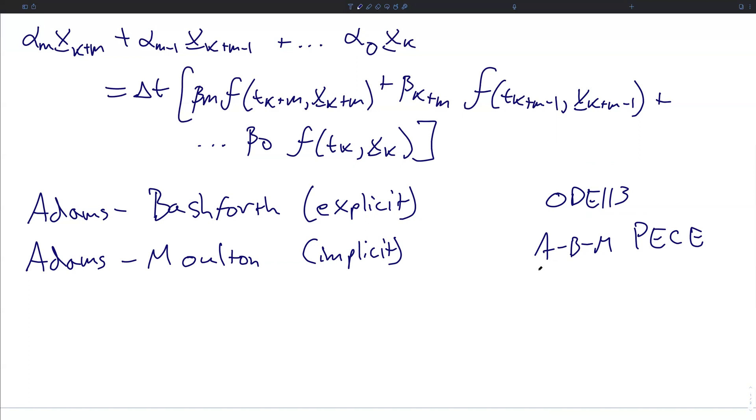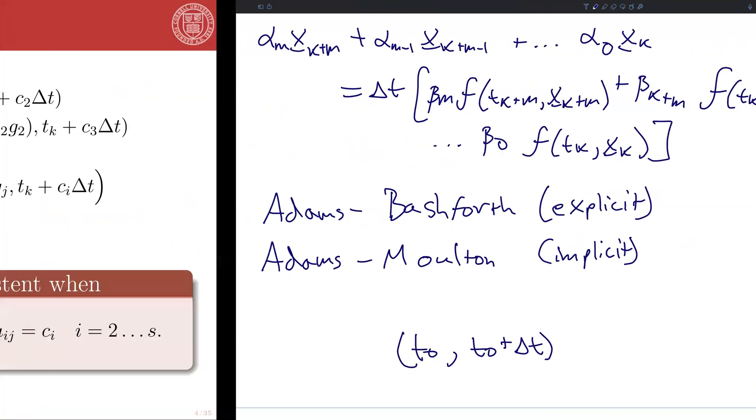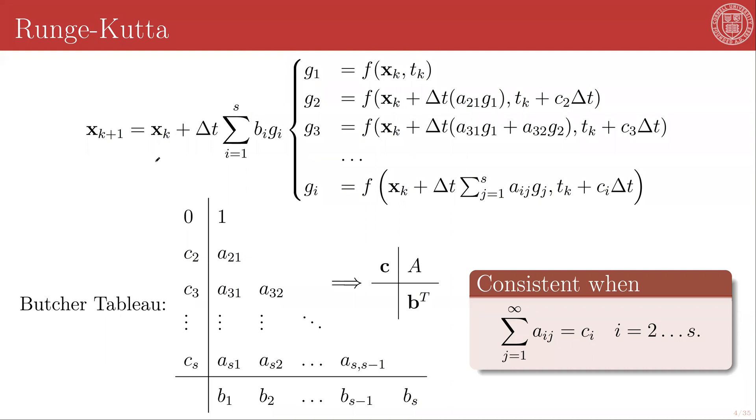Alternative to multi-step methods is to instead use additional points in the interval T_0 to T_0 + Δt, for T_0 being the starting condition of each propagation step. These family of methods are known as the Runge-Kutta integration methods. The Runge-Kutta integration scheme looks very much like a generalization of the Euler methods and is written as follows: x_{k+1} = x_k + Δt times the summation of the functions G_i times constants b_i, where you are taking s terms in the summation.